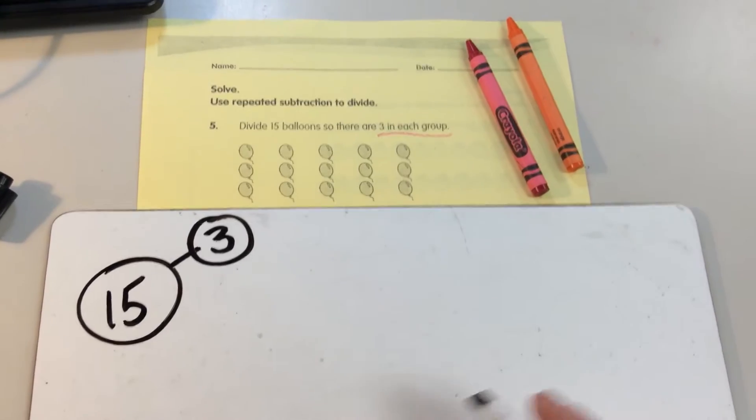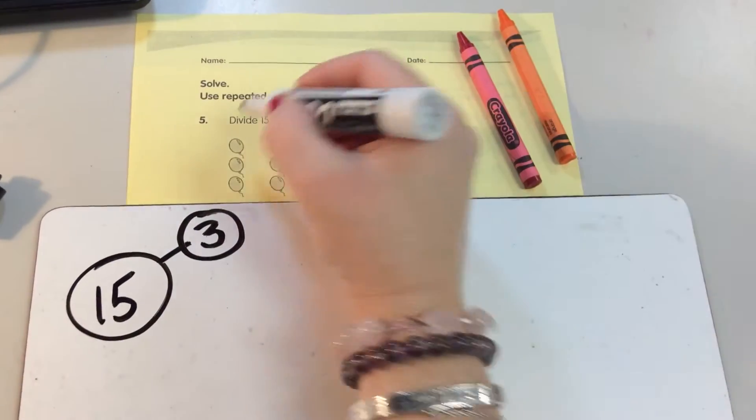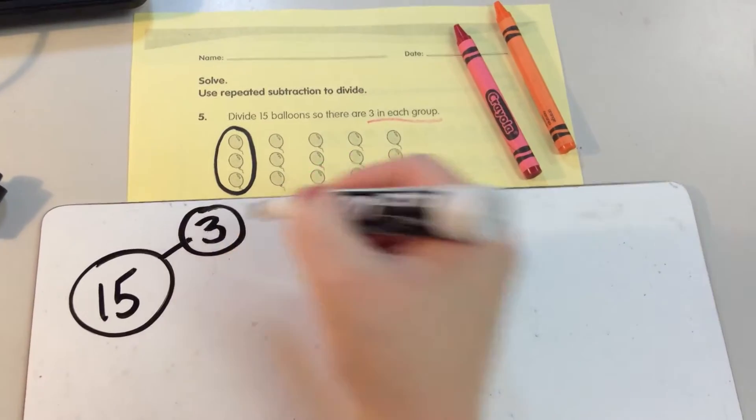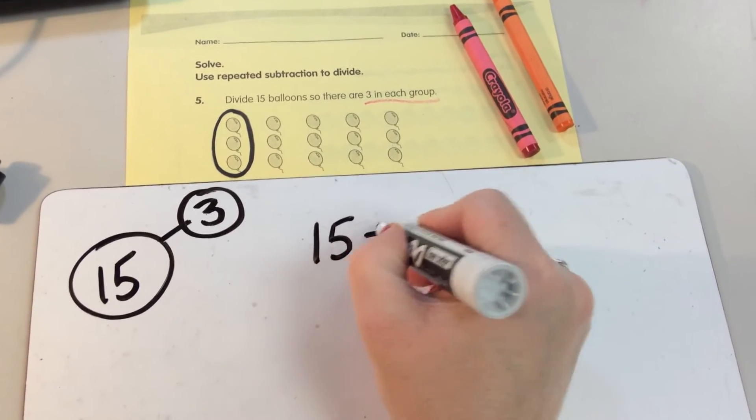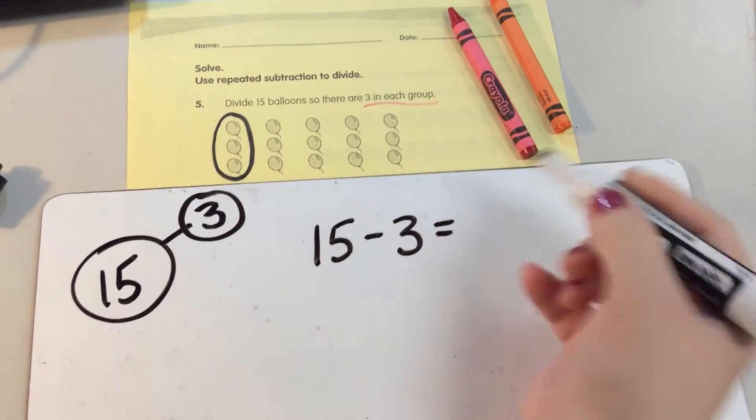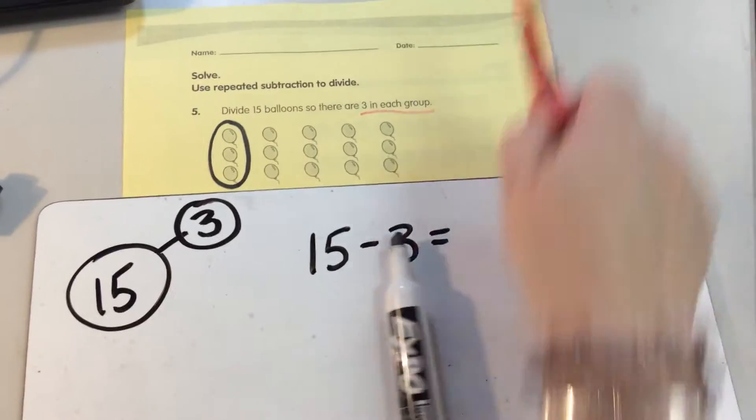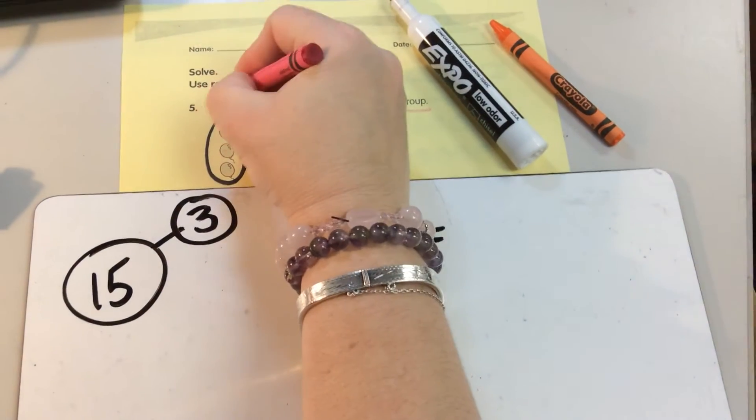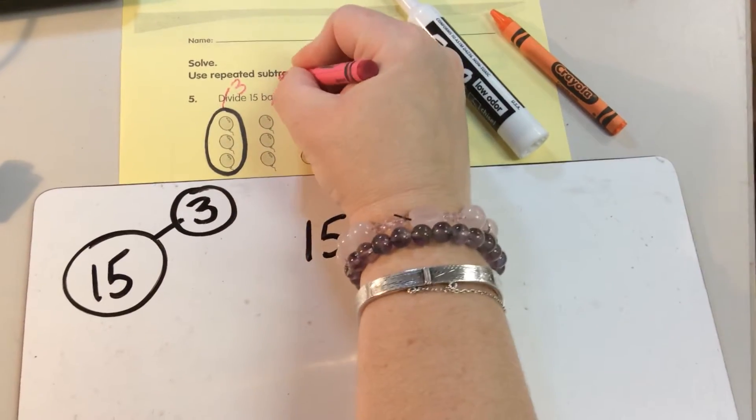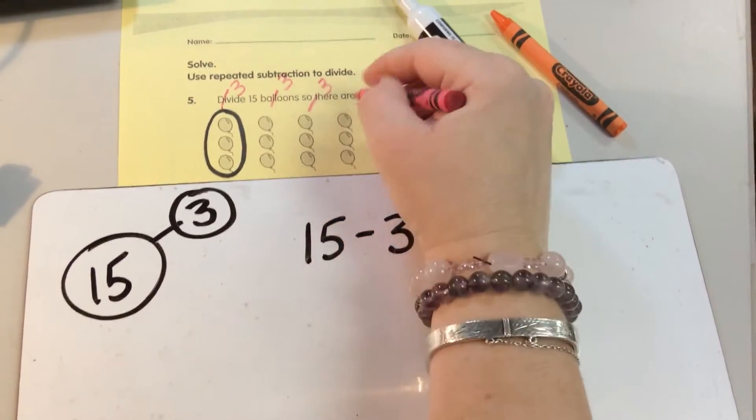Now, I'm going to give 1 group 3, and I did that. 15, I'm going to take away 3, and that left me with, and I'm going to show my work. I'm going to say, okay, 3, this is another 3, that's another 3.